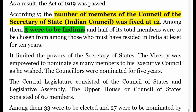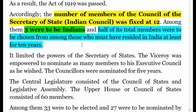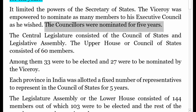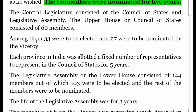Half of the total members — that is, six — were to be chosen from among those who must have resided in India for at least 10 years. Three Indians were definitely included out of the 12. The Act also limited the powers of the Secretary of State. The Viceroy was empowered to nominate members to his Executive Council, and councillors were nominated for five years.